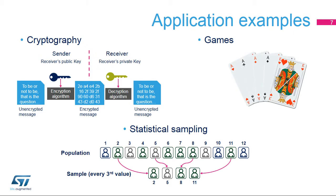The RNG can be used for a wide range of applications, including cryptography, games, and statistical sampling. For example, all the security of cryptography algorithms is connected to the impossibility of guessing the key. So the key has to be a random number, otherwise the attacker can guess it.